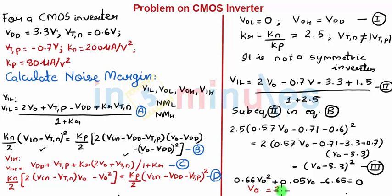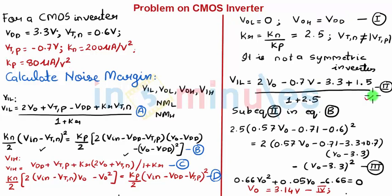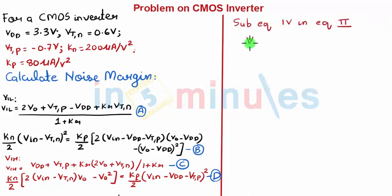Now we can easily find VIL. We found V out for the corresponding value of VIL. We substitute equation 4 in equation 2. This is VIL in terms of V out, and here we put V out equals 3.14 volts, which gives VIL equal to 0.57 into 3.14 minus 0.71, equal to 1.08 volts. This gives the value of VIL.